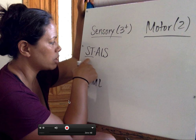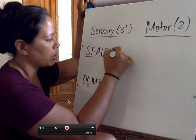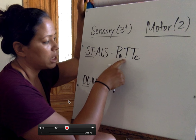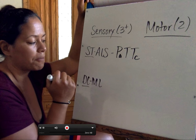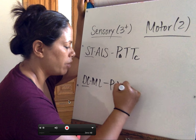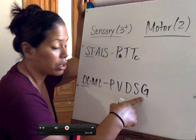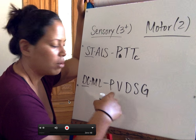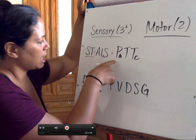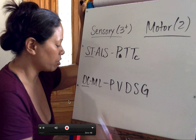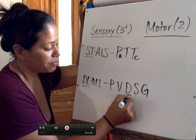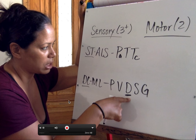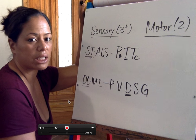There are three sensations associated with spinothalamic — remember them with 'Patsy': pain, temperature, crude touch. There are five sensations associated with DCML — remember them with 'Poor Very Dumb Silly Guy.' The way to connect the mnemonics: there's a D in DCML and a D in that mnemonic; there's a T in spinothalamic and a T in Patsy. D for D, T for T.